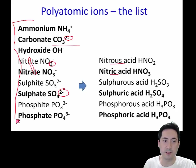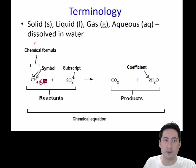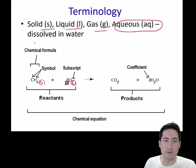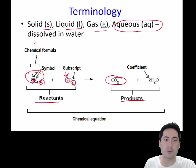Back up to more terminology. Be aware that the little symbol down here indicates state: S is solid, L is liquid, G is gas, and aqueous means it's dissolved in water. The subscript is written down here; the coefficient is here. When balancing, you can only change the coefficient — you can't change the subscript because that'll change the chemical it is. Reactants are on the left, products on the right, and the whole thing is called the chemical equation. The individual formula is called the chemical formula.